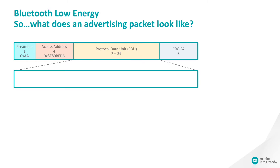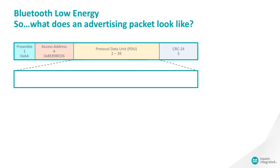Now we're ready to unpack the advertising PDU. We start with a 2-byte header that contains a set of flags and the payload length. Next there's an address field, though it may not represent any real address you can actually use — very frequently this is a random value that remains consistent only for the duration of the session. And finally, there's the advertising data included at the end.